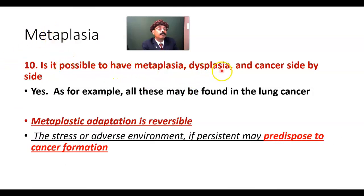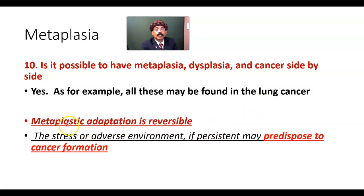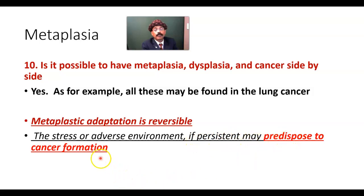Is it possible to have metaplasia, dysplasia, and cancer side by side? Yes, it is possible — for example, all these may be found in lung cancer. Metaplastic adaptation is reversible, at least initially. If the person does not smoke, they have less chance of getting lung cancer. If the person can control their gastroesophageal reflux disorder, they have less chance to develop esophageal cancer. If the stress or adverse environment is persistent, it may predispose to cancer formation.